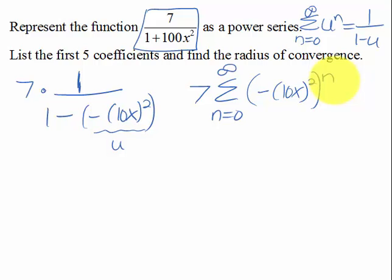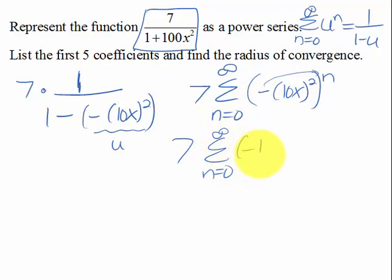Now I'm going to express this a little bit differently because I basically have this negative, which is like a negative 1 to the n, so I'm going to write that separated so I can see that alternating series piece. So I have negative 1 to the n, and then I will have 10x to the 2n, because we know that if we have an exponent inside and outside, we multiply those. So there is my power series representation of this function.